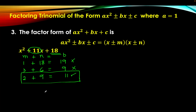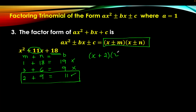Let's proceed to step 3. The factor form of the trinomial ax squared plus bx plus c is given by the quantity x plus or minus m times the quantity x plus or minus n. Since 18 is positive and the middle term is also positive, both numbers are positive. Therefore, the factor of x squared plus 11x plus 18 is the quantity x plus 2 times the quantity x plus 9. However, there is always a necessity to check whether we have the correct factor.